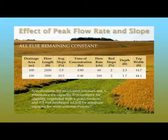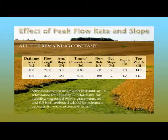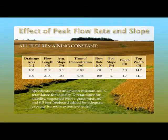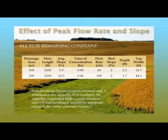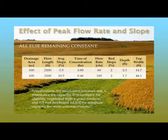Looking at the effect of peak flow rate and other conditions on grass waterway design size: for a drainage area of about 100 acres with two different times of concentration — at the lower time of concentration with lower flow rate, depth is about 2.3 feet and top width about 14.7 feet. As we reduce the time of concentration, flow rate increases, depth shallows to about 1.7 feet, but top width widens dramatically to about 44 feet.